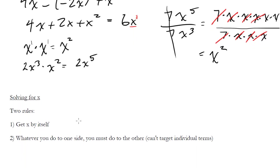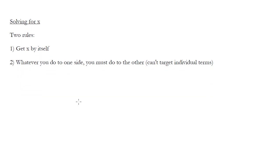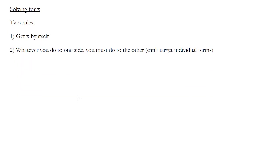Let's talk about solving for x. When you're solving for x there are two major rules. The first rule — the objective — is you want to get x by itself; you want x to equal something, preferably some number. That's the whole point of algebra: to find that solution. So to do that, we're basically unwinding the equation, doing things to it to get to that primitive x equals state. Rule number two: whatever you do to one side, you must do to the other. You can't target individual terms.